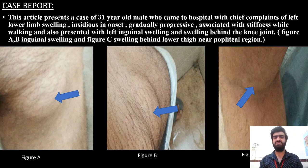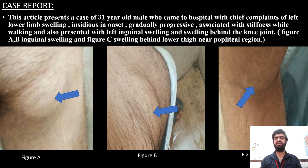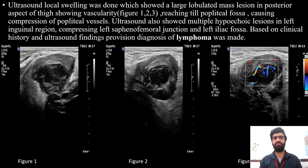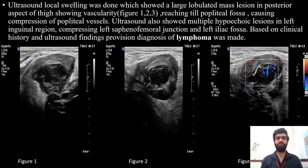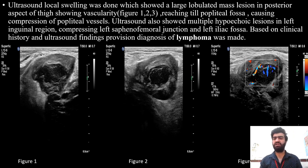In our case, a 31-year-old male came to hospital with chief complaints of left lower limb swelling, insidious in onset, gradually progressive, associated with stiffness while walking, left inguinal swelling, and swelling behind the knee joint. USG of the local swelling showed large lobulated mass lesions in the posterior aspect of the thigh with vascularity, reaching till the popliteal fossa causing compression of the popliteal vessels. USG also showed multiple hyperechoic lesions in the left inguinal region compressing the left saphenofemoral junction and left iliac fossa.